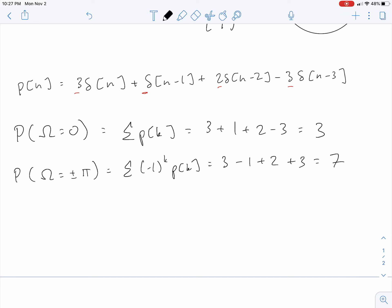And now I know that P of 0 is 3, P of plus or minus pi is 7. And I found the DTFT at some values really easily without needing to go deep into complex numbers and handling imaginary numbers.